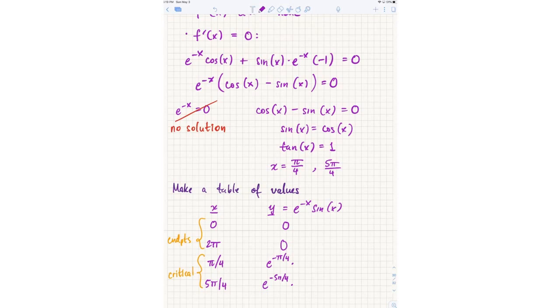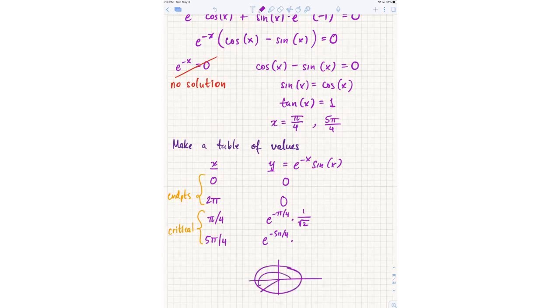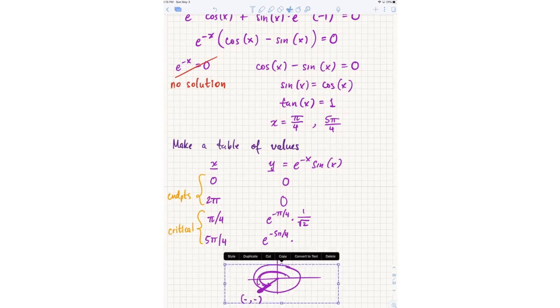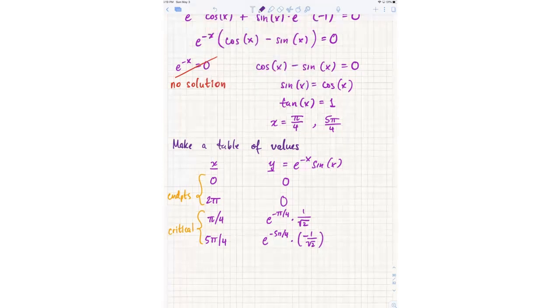So pi over 4, the sine of pi over 4 is 1 over root 2. And what about 5 pi over 4? It's not the same. The sine of 5 pi over 4 is not 1 over root 2. Unit circle, 5 pi over 4 is this angle here. The x-coordinate is negative, and the y-coordinate is also negative, right? So both the sine and the cosine are negative for 5 pi over 4. So in fact, we don't get 1 over root 2. We get negative 1 over root 2. Okay. So now what can I conclude? Can I conclude which is the biggest and which is the smallest?